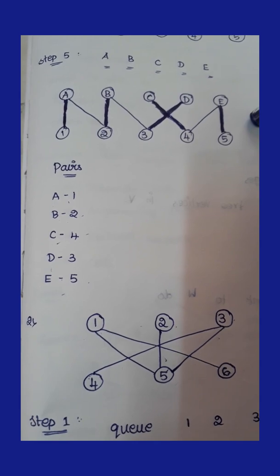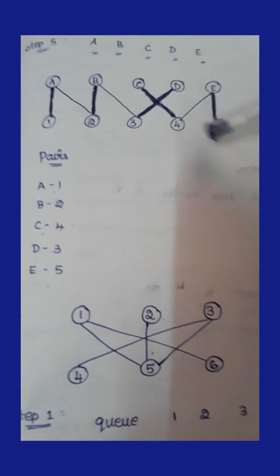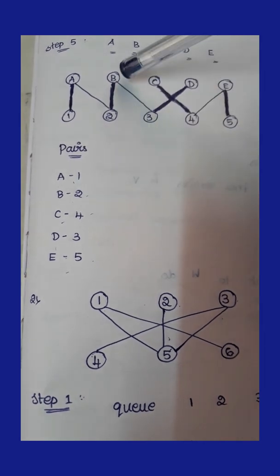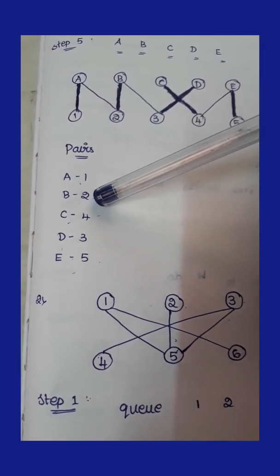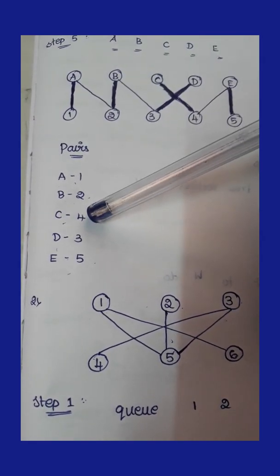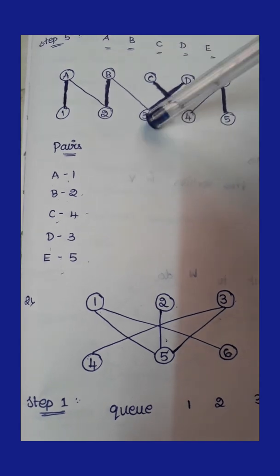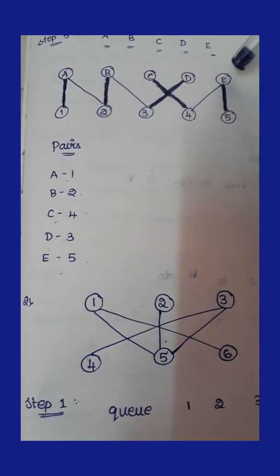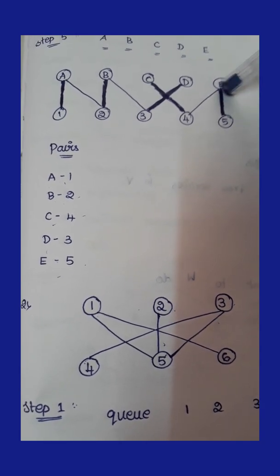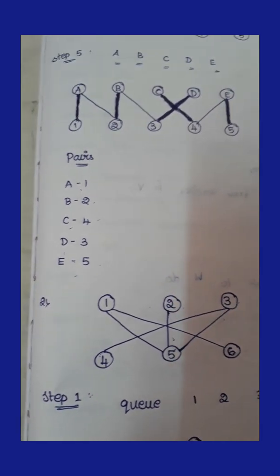This is the maximum matching in a bipartite graph. In conclusion, the matched pairs are: A is matched with 1, B is matched with 2, C is matched with 4, D is matched with 3, and E is matched with 5. All pairs are marked with shaded lines. This completes the maximum matching in a bipartite graph.